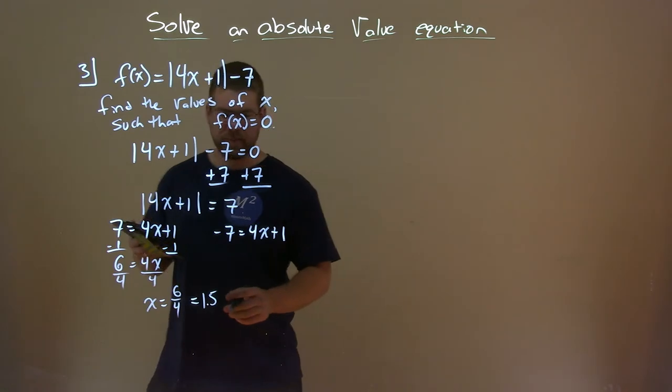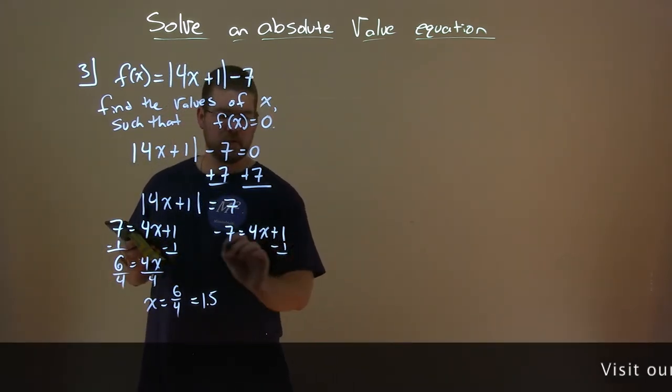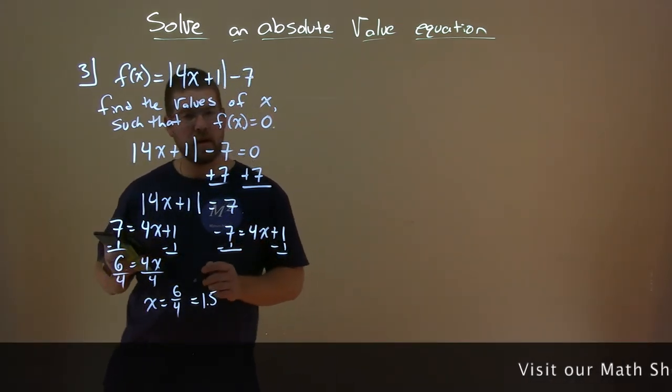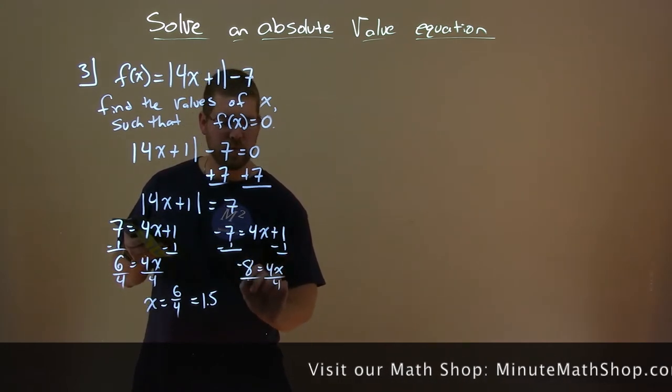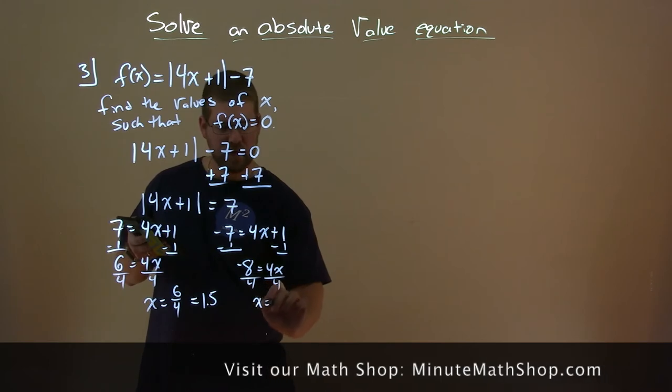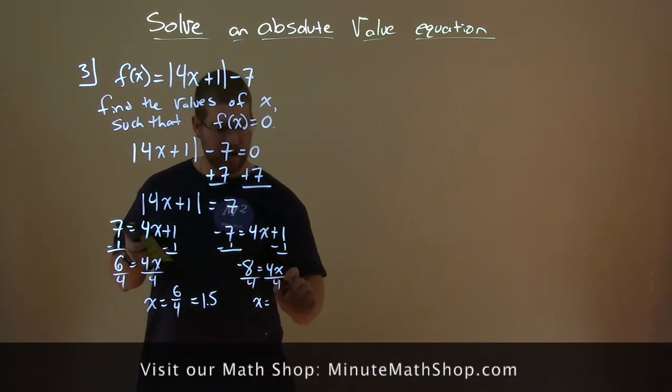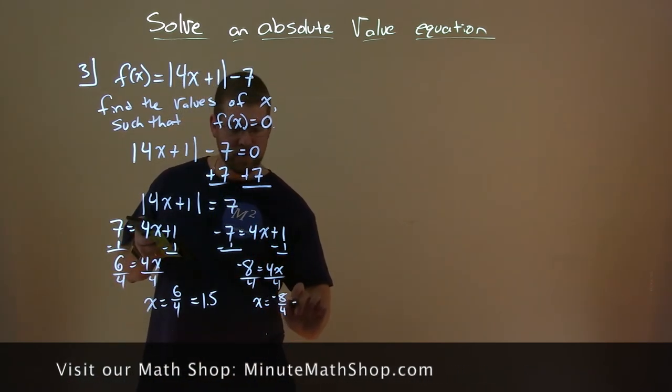The other value here, same thing, subtract 1 on both sides. Negative 7 minus 1 is negative 8 equals 4x. Divide both sides by 4, and x equals, well, negative 8 divided by 4 is equal to negative 2.